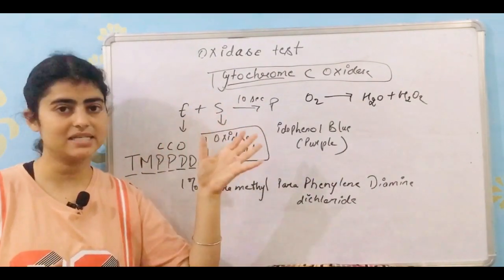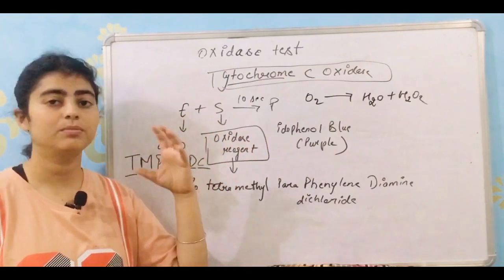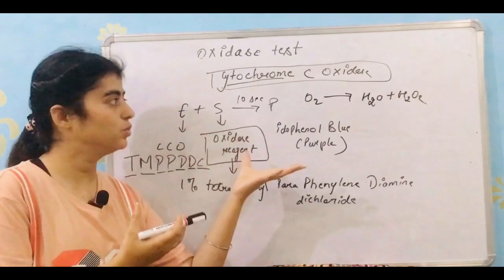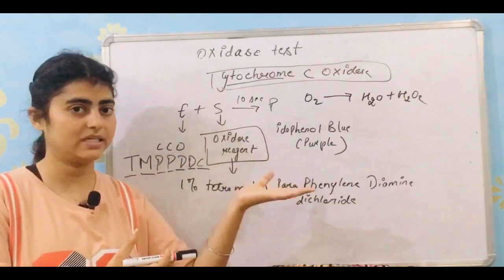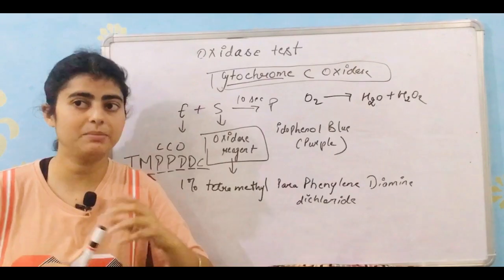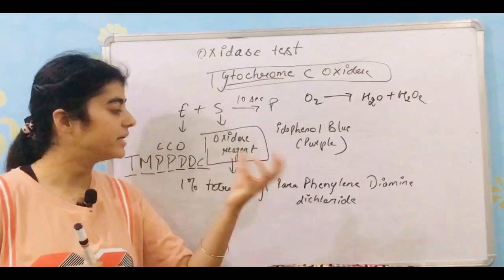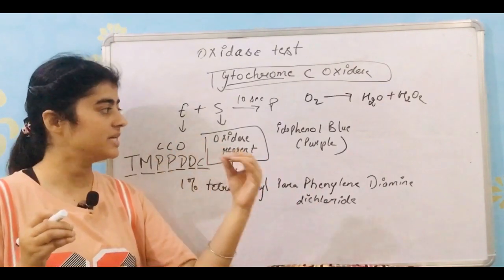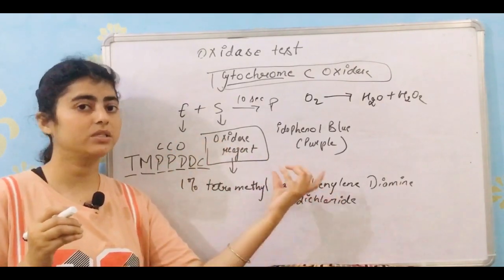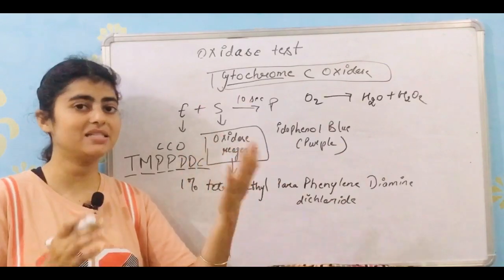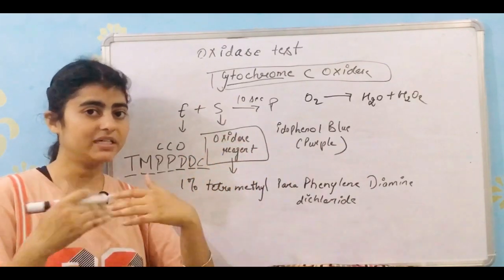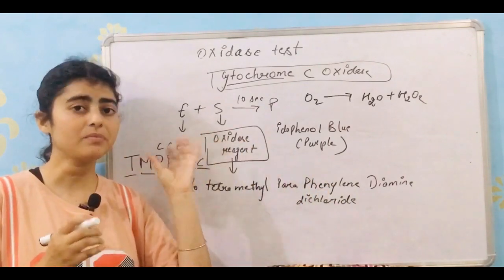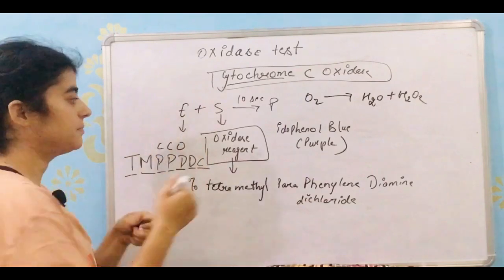And now further moving to the procedure. Now how will you perform this oxidase test? There are commercially available discs that are already soaked in this oxidase reagent. Simply what you have to do is you just have to pick your colonies, like the colonies that are suggested for the further diagnosis, you simply have to pick up that colony and put that colony on that filter paper disc.